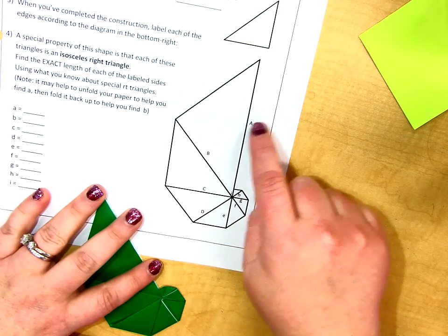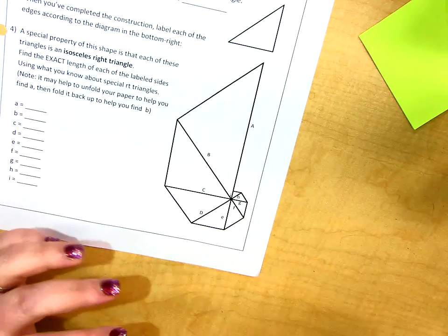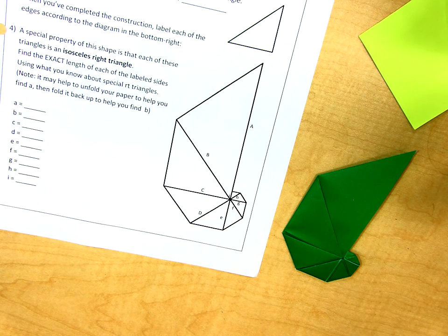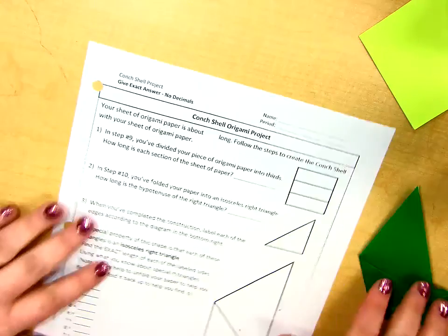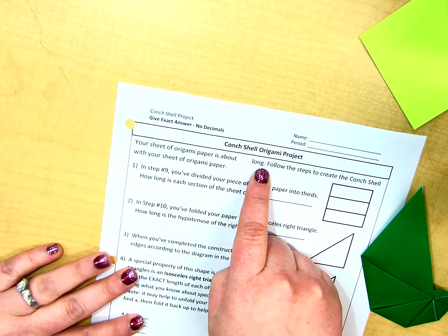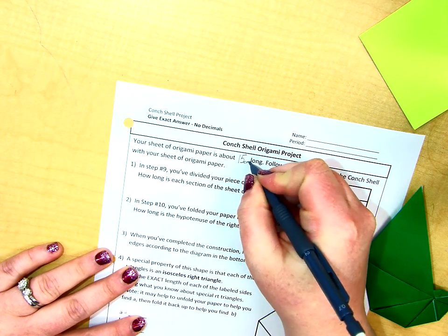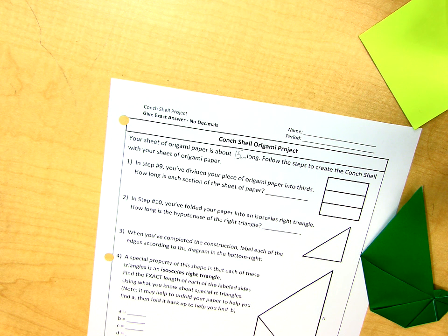So here's what we're gonna do. We're gonna find the value of all of these lengths A, B, C, D all the way through to I. So yeah it's cute to have this you don't need it though. But what you do need is the original size of the square. So this square is actually 15 centimeters by 15 centimeters. So up at the very top the very first sentence says your sheet of origami paper is about blank long you need to fill in 15 centimeters right in there. And it's actually not about it's exactly.